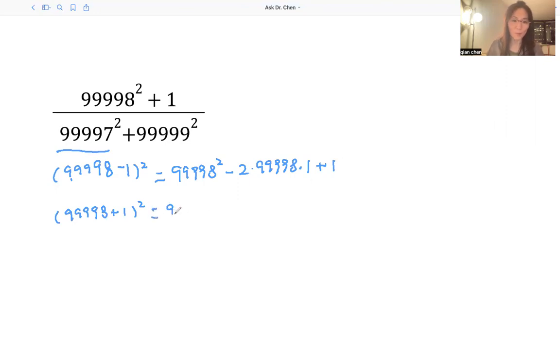Similarly for this one, we also get 99998 squared. Usually you should use t or k to substitute this number. Then plus 2 times 99998, because it's a lot of writing, then plus 1.